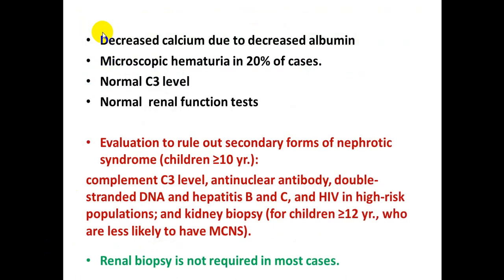Other investigations include serum calcium, which is decreased due to decreased albumin since part of calcium is attached to albumin. In 20% of cases there is microscopic hematuria. C3 level and renal function tests are normal. Evaluation to rule out secondary types of nephrotic syndrome includes complement C3 level, antinuclear antibody, double-stranded DNA, hepatitis B and C, and HIV in high-risk populations.